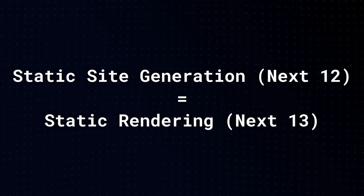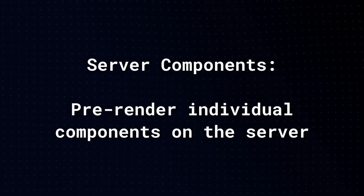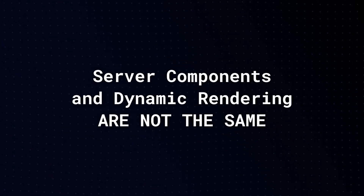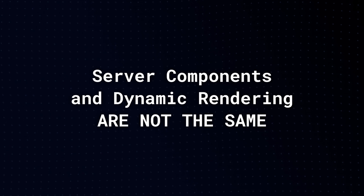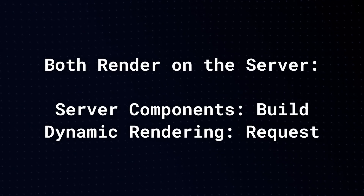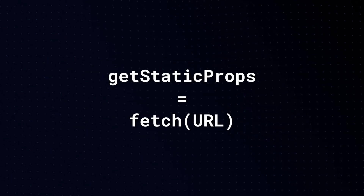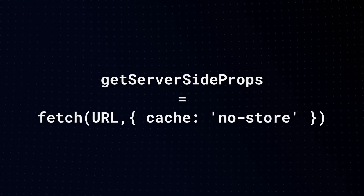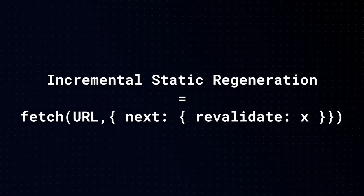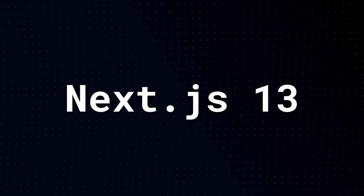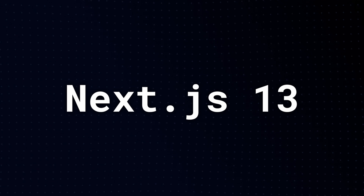That was a lot to take in, so here's a quick recap. Static site generation is now called static rendering — both are the default. Server-side rendering is now called dynamic rendering. With server components, we can now pre-render individual components on the server. Server components and dynamic rendering are not the same: server components are pre-rendered once on the server at build time, while dynamic rendering renders an entire route on the server at request time. Instead of getStaticProps, use the default fetch function. Instead of getServerSideProps, use the cache: no-store option. For incremental static regeneration, use the next: revalidate option. Next.js has changed the whole game, but once you get your head around it, it's much easier and more intuitive than the old way.